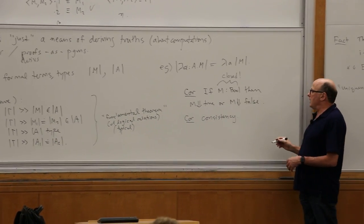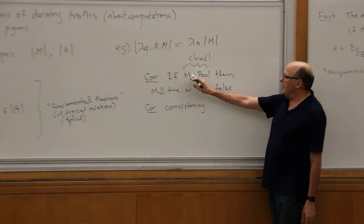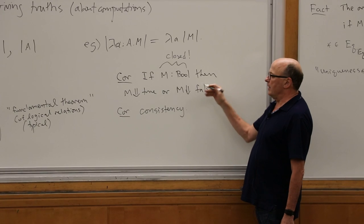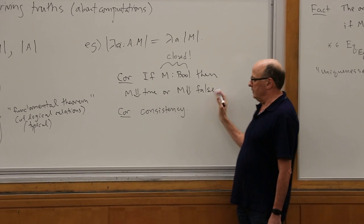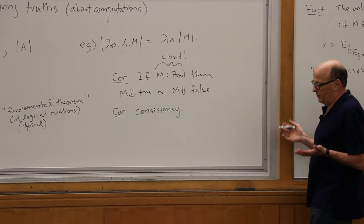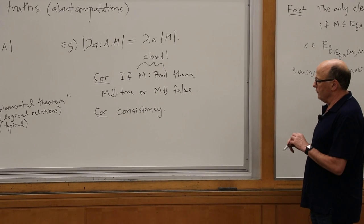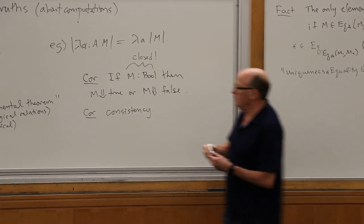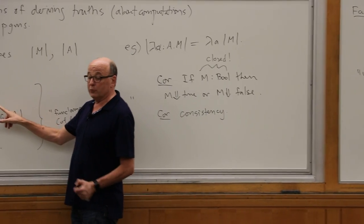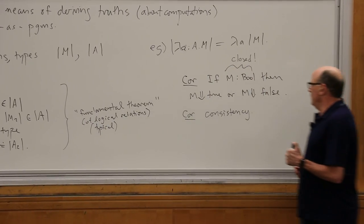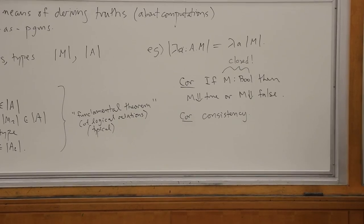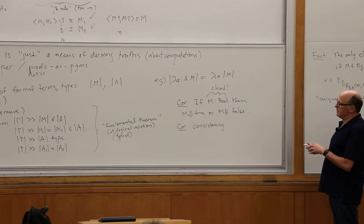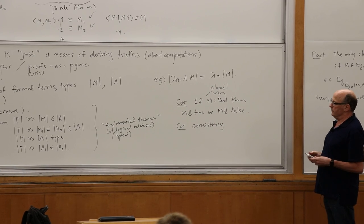A particular corollary of that which has been emphasized is a kind of logical consistency, because I couldn't possibly prove that true is equal to false syntactically. If I were to do that, I would violate this criterion. I know these are going to evaluate to either true or false, which are equal in the meaning of bool, which contains only true and false. And equality is the reflexive relation.